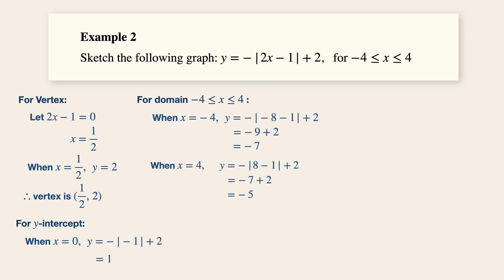Now let's try to sketch this particular graph. Again, in less than a minute, quickly plot the vertex and y intercept as such. Also indicate the points of the extreme ends of the graph, which is minus four minus seven, and four minus five.